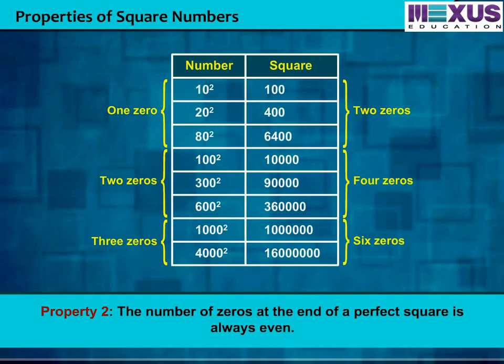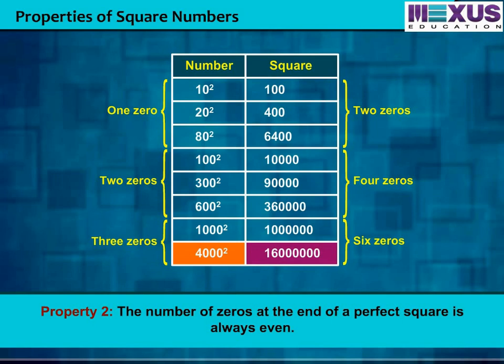Look at this table. You can see: 10 square is 100, 20 square is 400, 80 square is 6,400, 300 square is 90,000, and 4000 square is 1,60,000,000. All the perfect squares have even zeros.